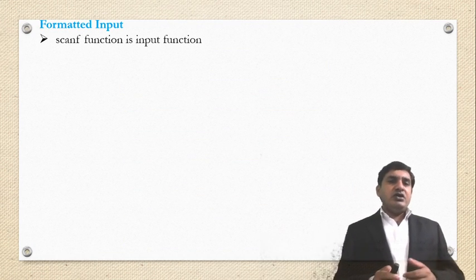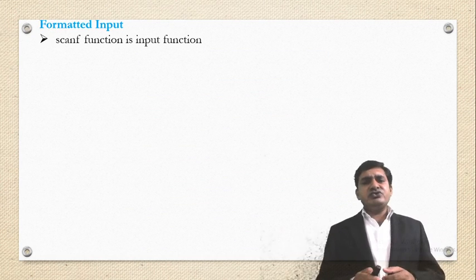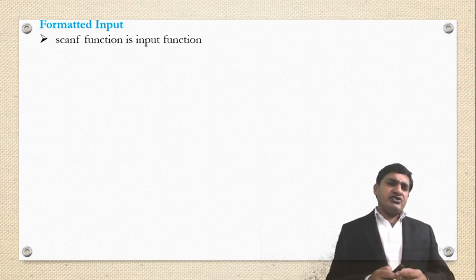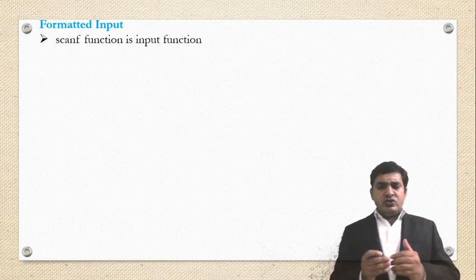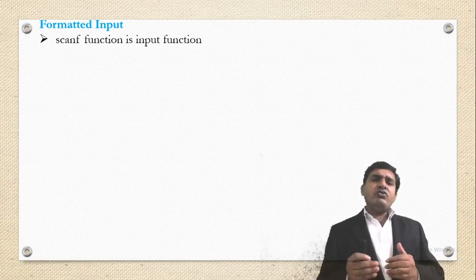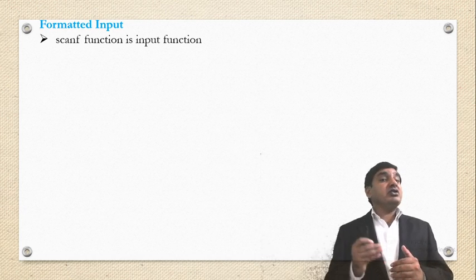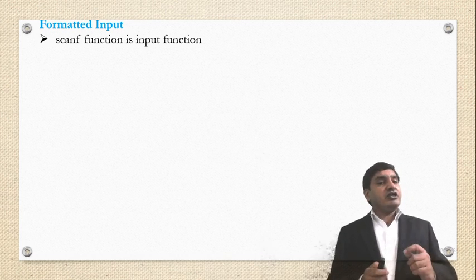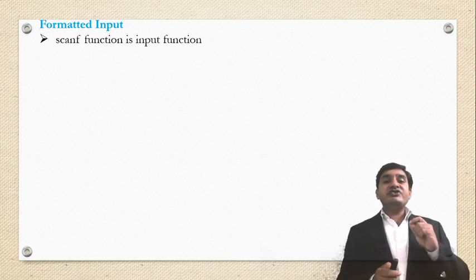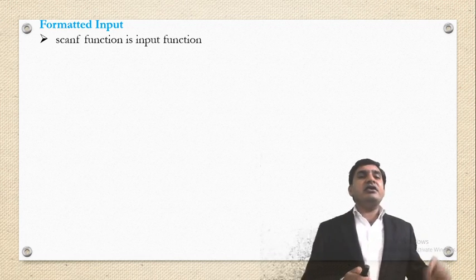Now we consider formatted input. The scanf function is used as an input function to give input to the computer. It is the standard input function. For example: scanf("%s %d %f", ...) — %s is used because name is a string, %d because roll number is an integer, and %f because the value consists of a decimal point. The scanf function is always terminated with a semicolon.